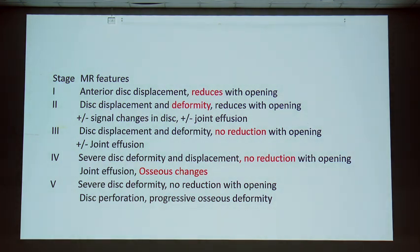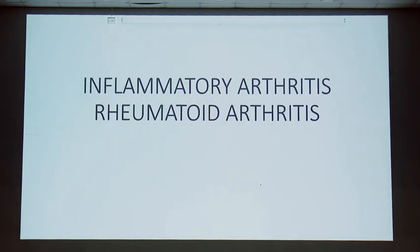There are various stages, stage 1 to 5, classified by whether the disc is reducing or not, and whether there are osseous changes. Stage 1 is normal; stages progress through anterior displacement with reduction, anterior displacement without reduction, and then degenerative osseous changes.